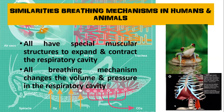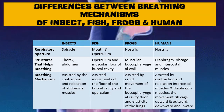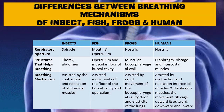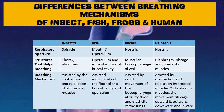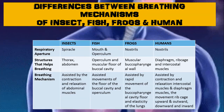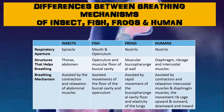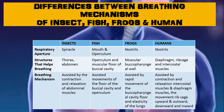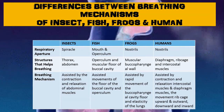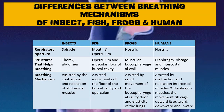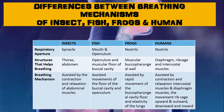Now we discuss the differences between the breathing mechanisms of insects, fish, frogs, and humans. For the respiratory aperture: insects use the spiracles, fish use the mouth and operculum, and frogs and humans use the nostrils. The structures that assist breathing in insects are the thorax and abdomen. For fish, it is the operculum and the muscular floor of the buccal cavity. Frogs use the muscular buccal pharyngeal wall.